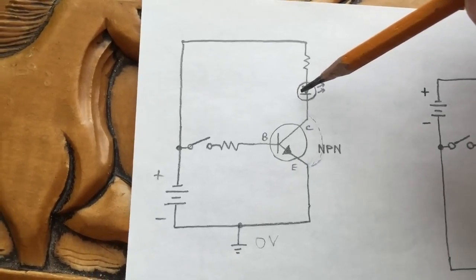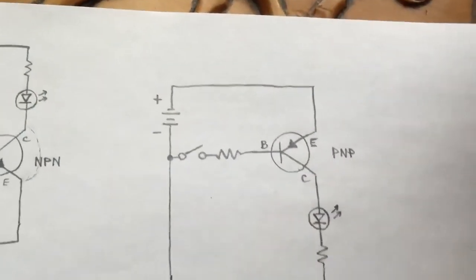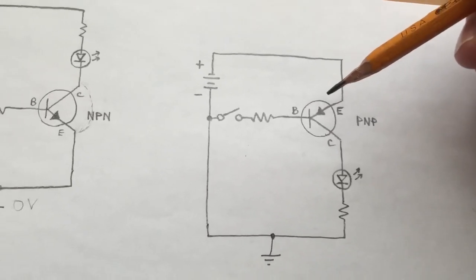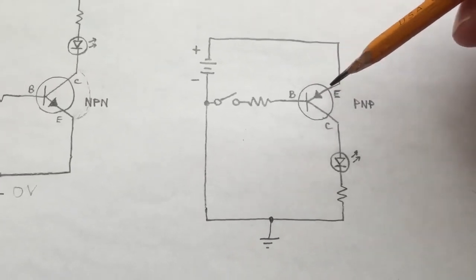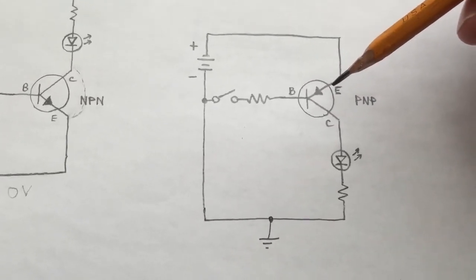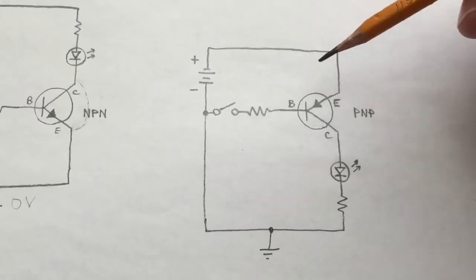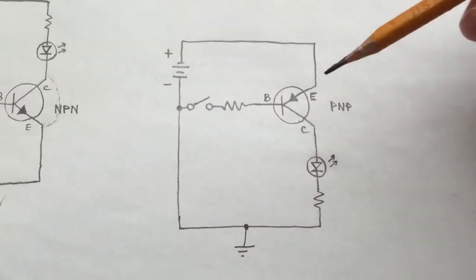Let's take a look at a PNP transistor. I've drawn this with the emitter on top, just to make the overall circuit more similar to the NPN one for comparison.